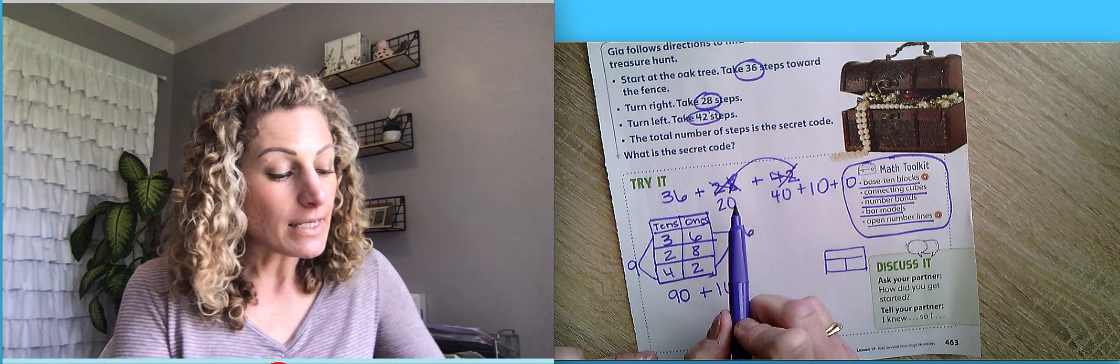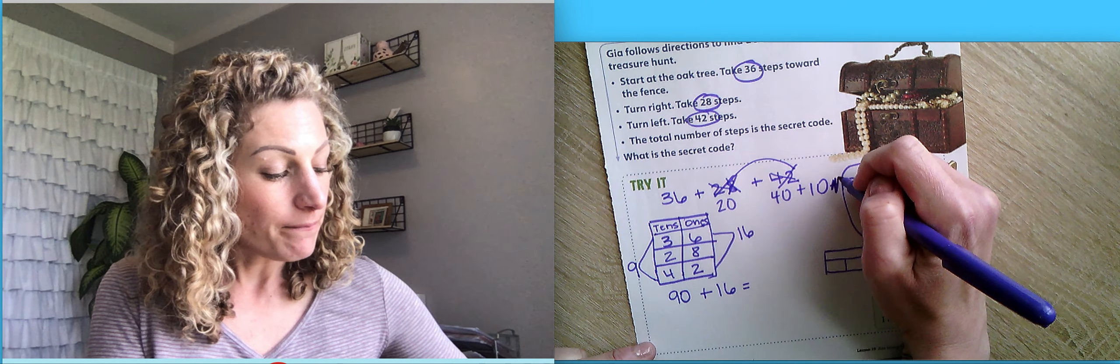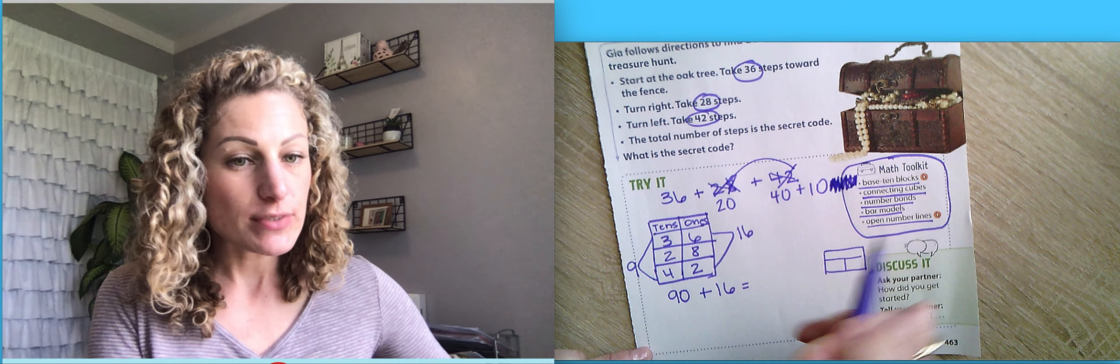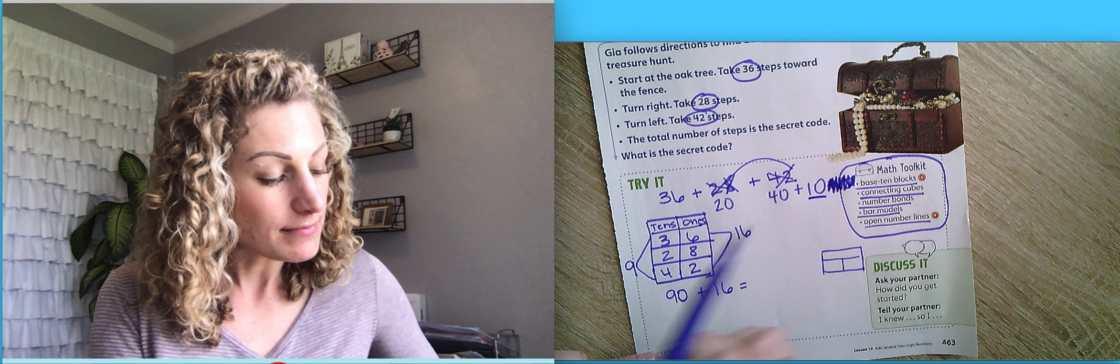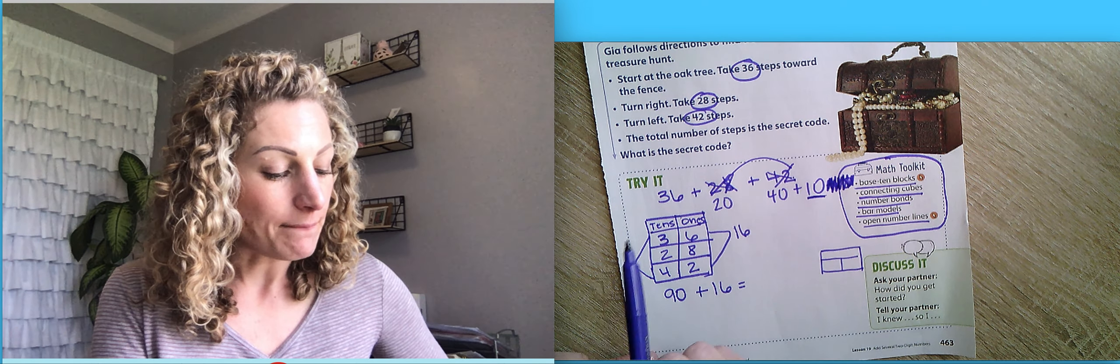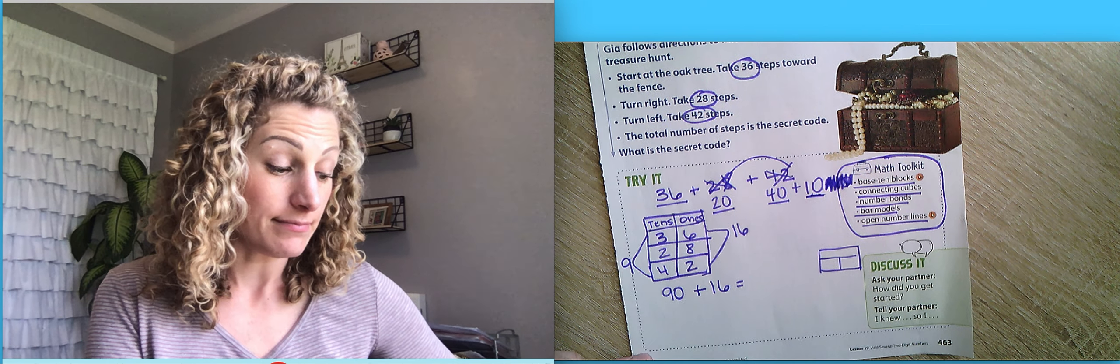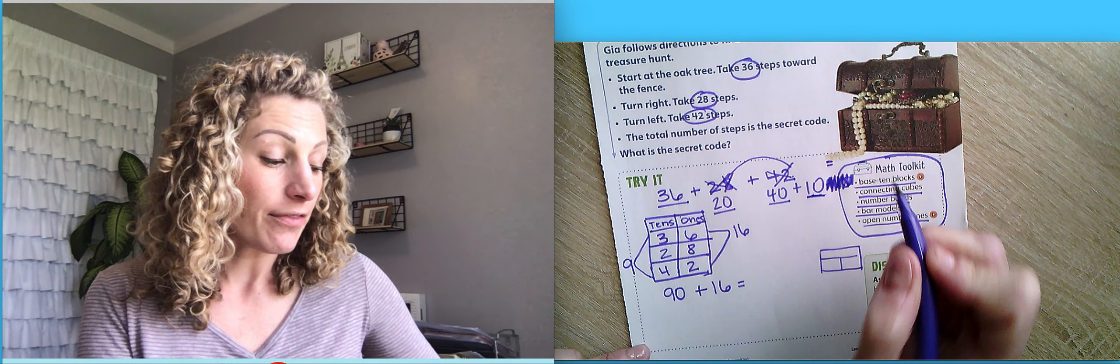So we had to add another 10 because we had this 10 here. That's not right, boys and girls. You did that already. It's right here. So we took the 8 and the 2 and we made the 10. So we have 36 plus 20 plus 40 plus 10. That would be another way to do it.